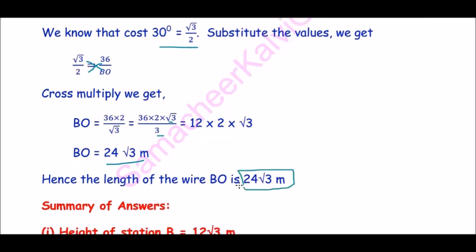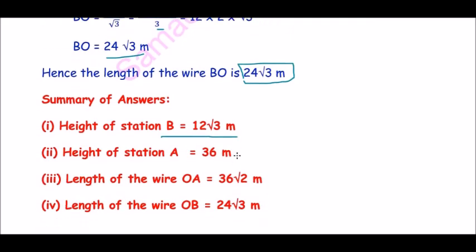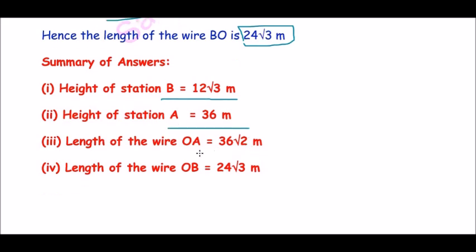So the summary of answers are: height of station B equals 12 root 3 meters, height of station A equals 36 meters, length of the wire OA equals 36 root 2 meters, and length of the wire OB is 24 root 3 meters.